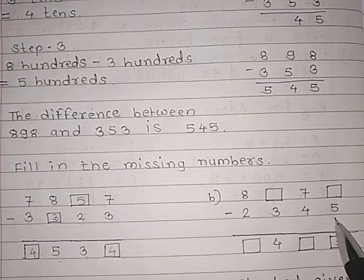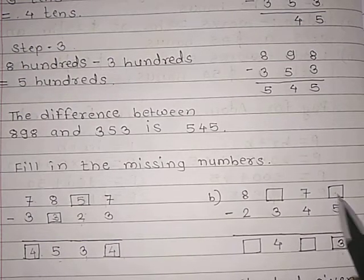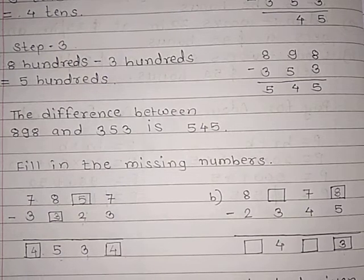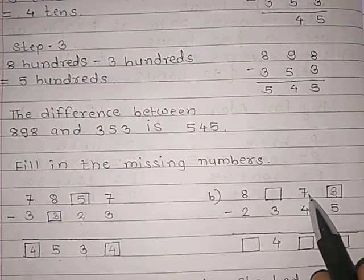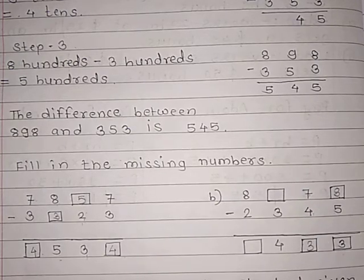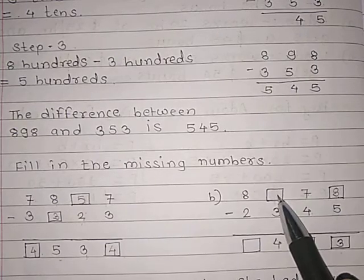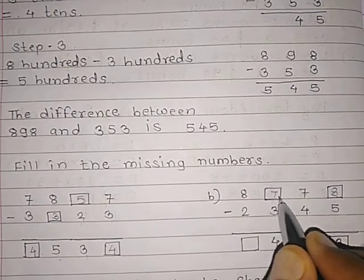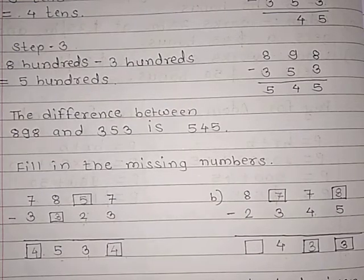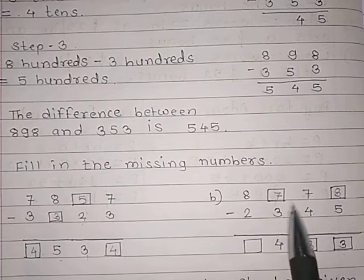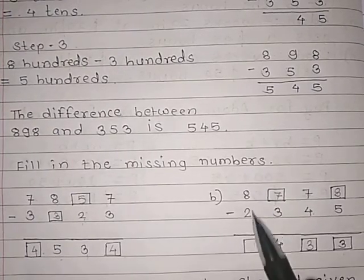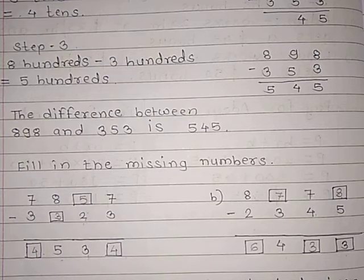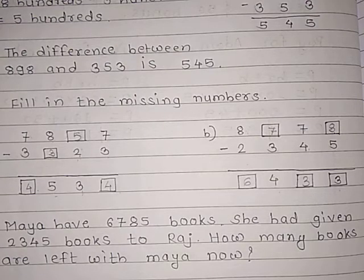Now the second example: In the unit place we have a blank and we subtract 5, with the answer being 3. So blank minus 5 equals 3, meaning 8 minus 5 equals 3. Then 7 tens minus 4 tens equals 3 tens. In the hundreds place, blank minus 3 equals 4, so 7 minus 3 equals 4. In the thousands place, 8 minus 2 equals 6. So the final answer is 6433.